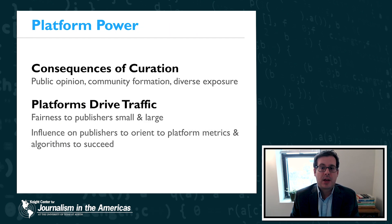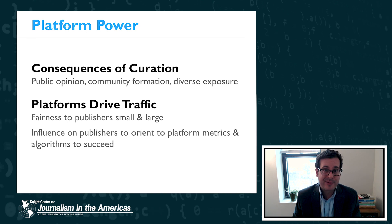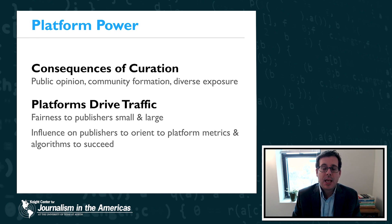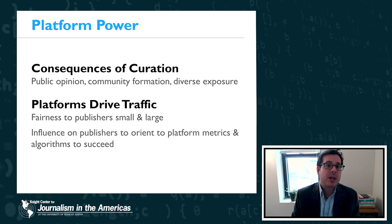To recap, a couple of key takeaway points: first, curation decisions can lead to all kinds of consequential impacts for society — they can impact public opinion, influence democratic processes like voting and voter turnout, affect whether people are able to find each other and form communities online, and impact the diversity of information exposure that people have. The other key point is how important these platform algorithms are for driving traffic to news content, with implications for both smaller and larger publishers. Because of the power of platforms in driving exposure to news information, media publishers typically have to orient to the metrics and algorithms of the platforms in order to succeed. I'll talk about this more in the next video in terms of how publishers are optimizing content for news distribution.